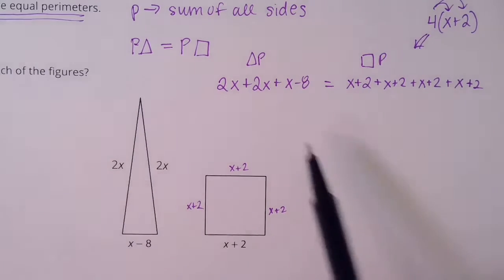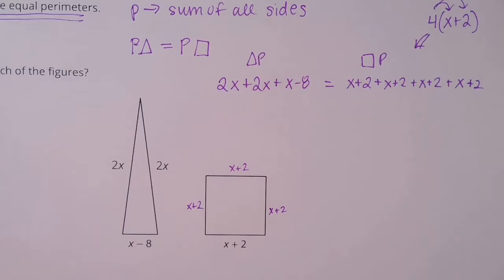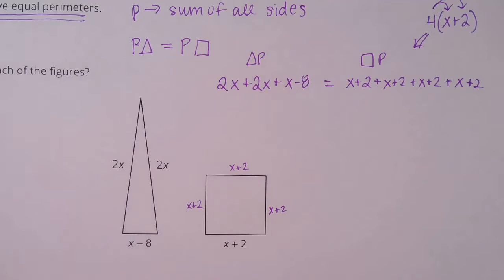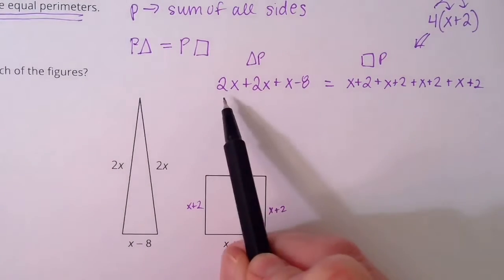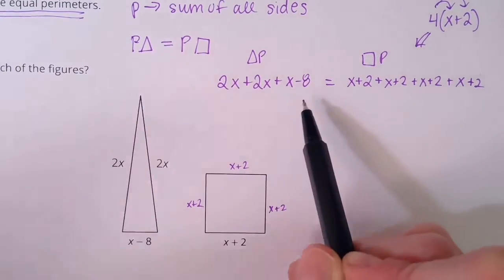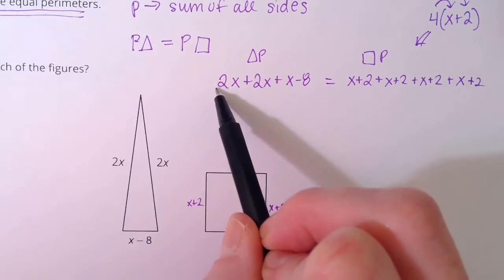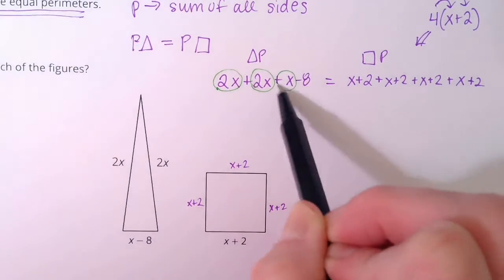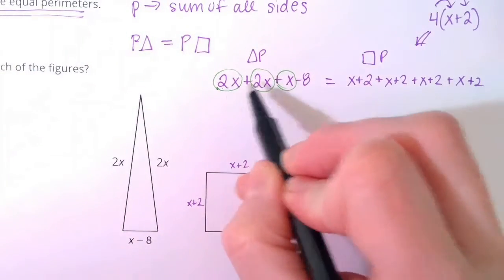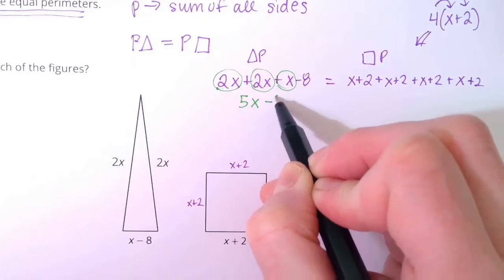We need to find the value of x, which means I need to do some equation solving. Thinking back to lesson 5, one of the first things we want to do is simplify. Imagine the hangers — we have all these different pieces on each side. Let's combine them together so we really know what we're dealing with. Looking at the left side: I have an x, an x, an x — so together I have five x's minus eight.